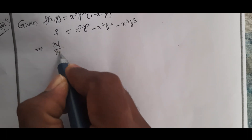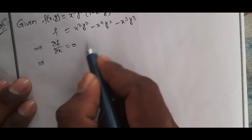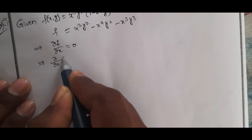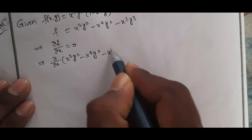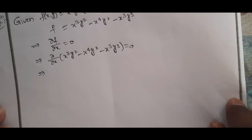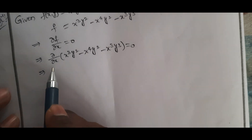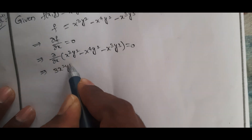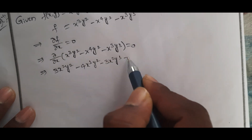First, we compute ∂f/∂x = 0. Taking the derivative with respect to x: 3x²y² - 4x³y² - 3x²y³ = 0.